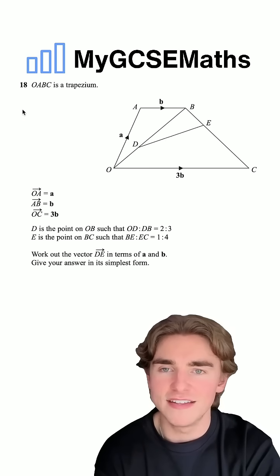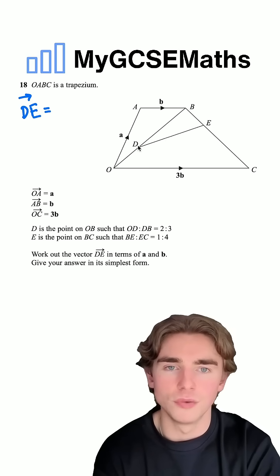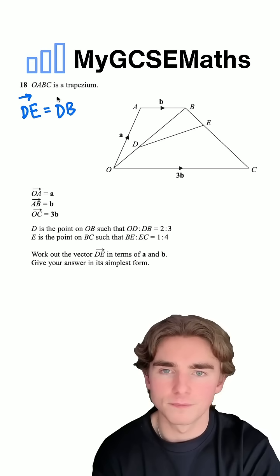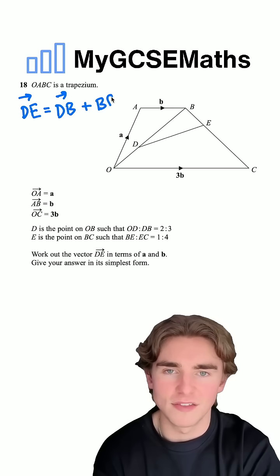So we can write out that the vector DE is equal to DB plus BE. That's the first thing.